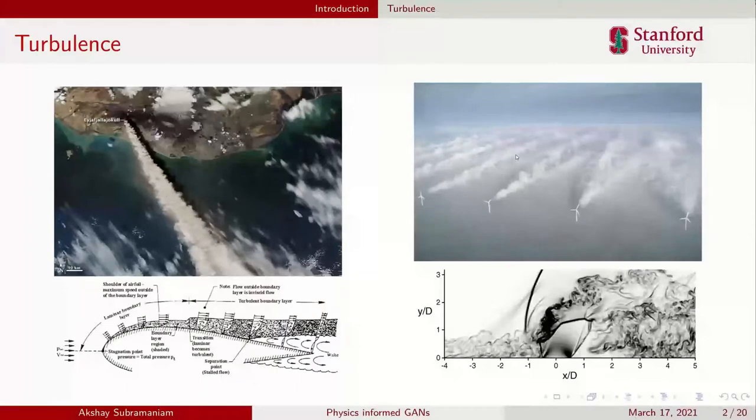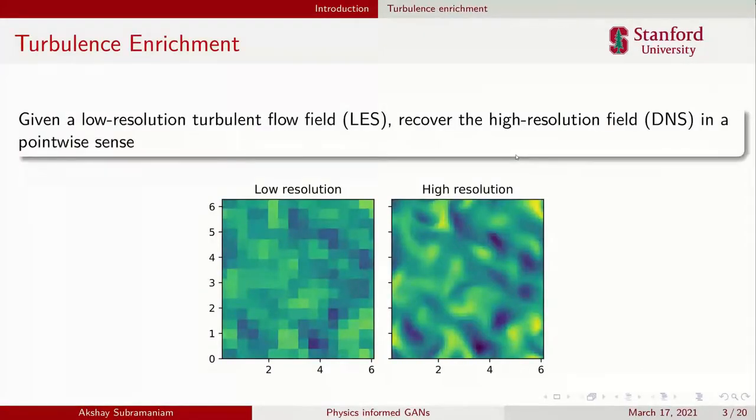The problem we're looking at is turbulence enrichment. Essentially the idea is if you have a low resolution field from a large eddy simulation or experimental measurements where you don't have access to the finer scales because of time or spatial resolution limits, can you recover a statistically similar high resolution field? That's the overall problem we're trying to address.